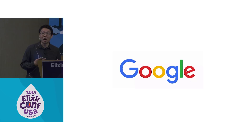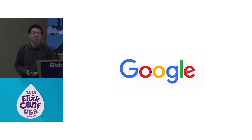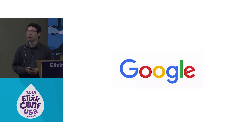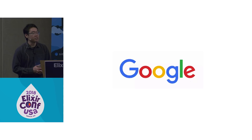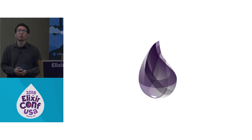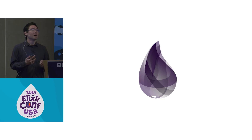Google has been in containers for a long time — heavily invested in containers. We've been using them long before Docker was even a thing. Containers were really a key part of Google's infrastructure strategy. As a Googler, I really understand how important this technology is. But at the same time, as an Elixir developer, I feel this friction — this sense that containers don't seem to be working that well for us. There's something that needs to be fixed here.